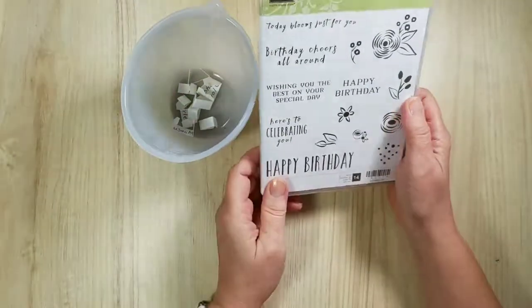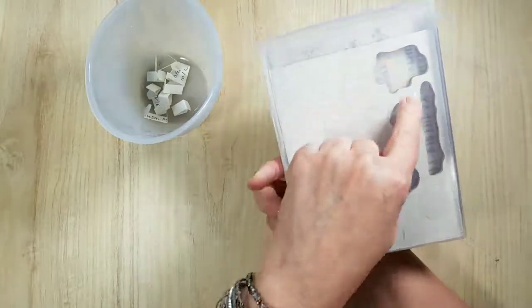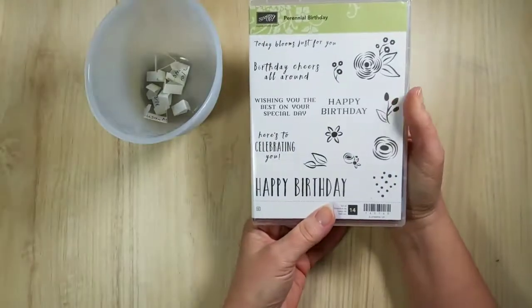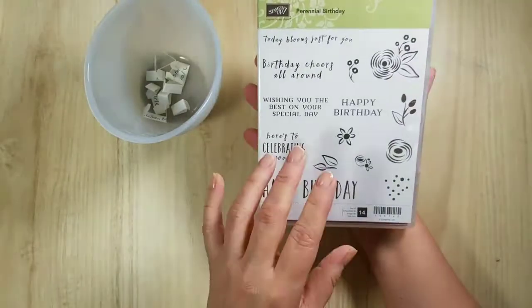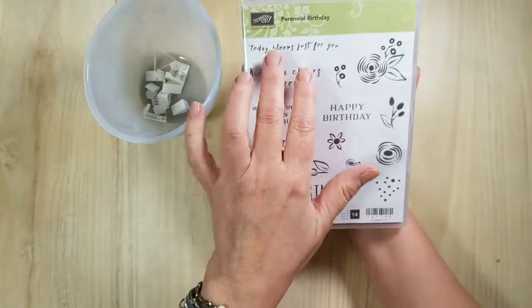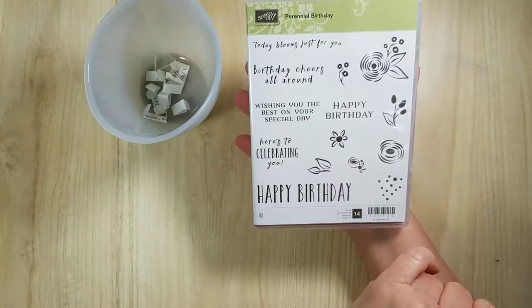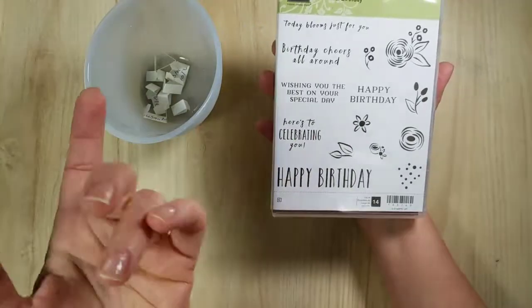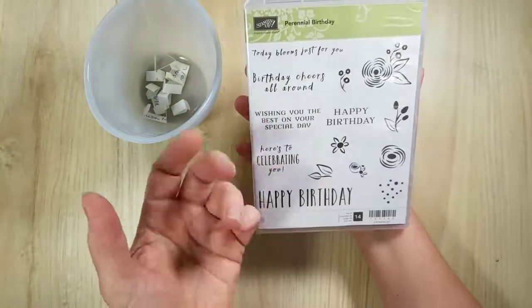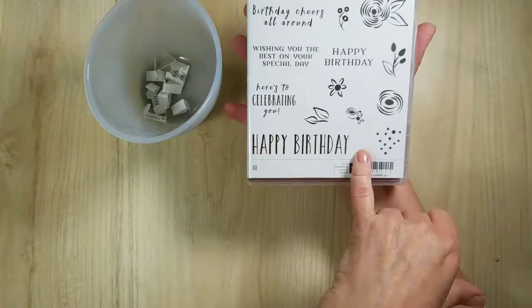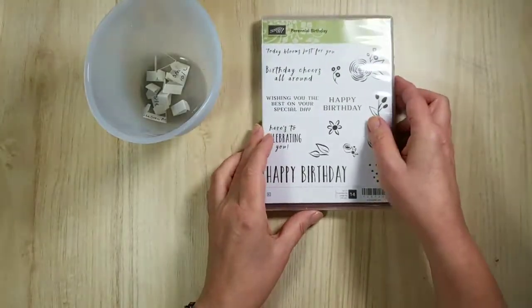This is the set we're going to be using today: perennial birthday. Honestly, I had not inked it up. These are the only stamps I've taken out so far and I'm using those today. The sentiments are lovely - today blooms just for you, the flower, these little sprigs. And for the inside, celebrating you because it's your birthday. This is really cute font, kind of handwritten looking, which I rather like. So when I do my video on Friday, we're going to step it up a little bit. Today's card is really quick and easy.